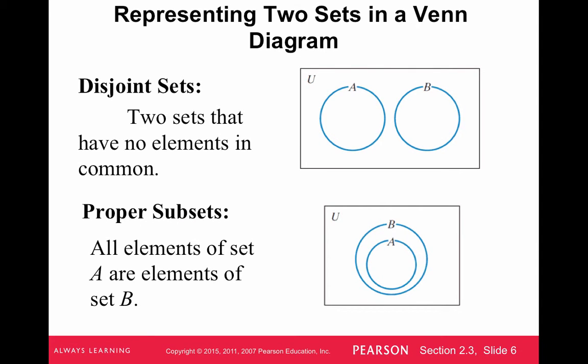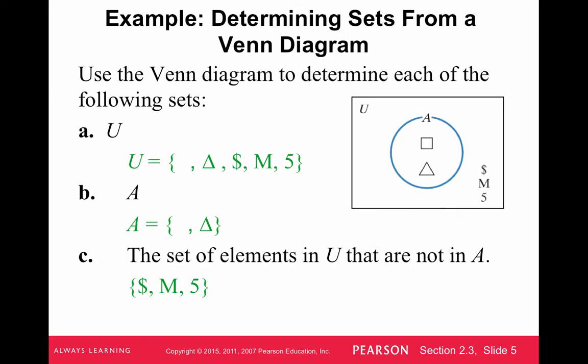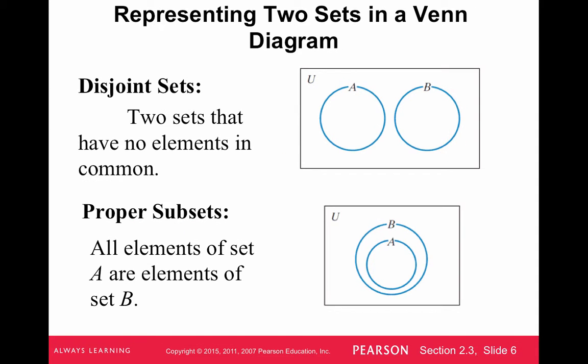The big thing we want to go over is the representation between two sets in a Venn diagram — not just A and the complement of A, but A and B. We're going to have four different relationships. The first one is when two sets are disjoint, when they have no elements in common.